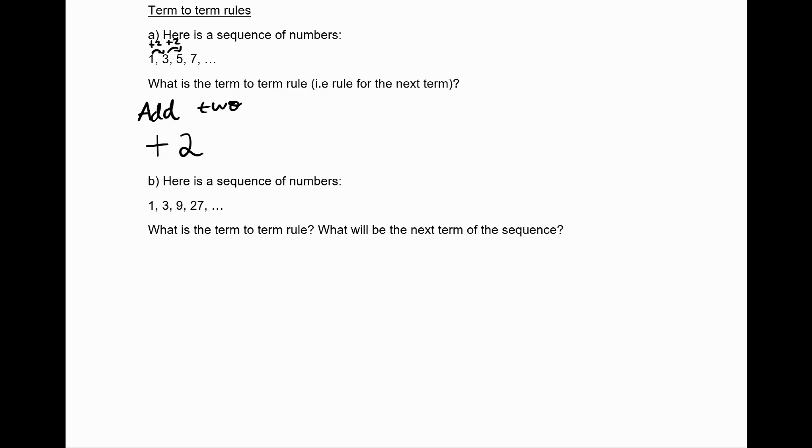In B, we again are asked for the term-to-term rule. It's a little bit different this time. We have 1 going to 3, 3 going to 9, 9 going to 27. A little bit of thinking will reveal the fact that we are timesing by 3 every time. 1 times 3 is 3, 3 times 3 is 9, 9 times 3 is 27. So the term-to-term rule is multiply by 3, or in symbols, times 3. The next term, therefore, is going to be 27 times 3, which is 81. So we can say the fifth term of the sequence is 81.